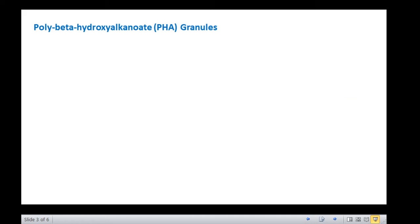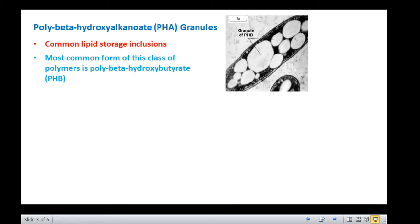One of the more common lipid storage granules is poly-beta-hydroxyalkanoate. It is a long polymer of repeating hydrophobic units that can have various carbon chains attached to them. The function of PHA in bacteria is as a carbon and energy storage product. Just as we store fat, bacteria store PHA. The most common form of this class of polymers is poly-beta-hydroxybutyrate. Let us see the general structure of PHA monomer where a methyl group is attached as the side chain.